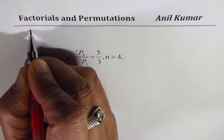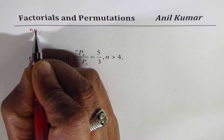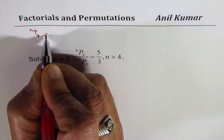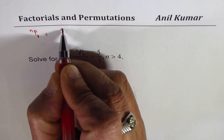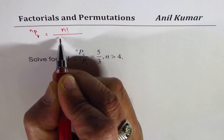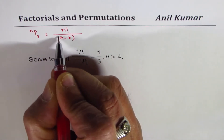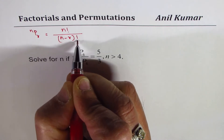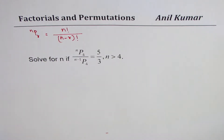In general, the formula for nPr is n factorial divided by (n minus r) factorial. You can always pause the video, use this formula, solve the question and then look into my suggestions.